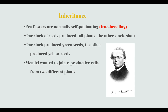What he did is he took a stock of seeds that produced all tall plants and a stock of seeds that produced all short plants. One of those stocks produced green seeds and the other produced yellow. Mendel wanted to join reproductive cells from these two different plants and see what would happen — what characteristics would show in the next generation?